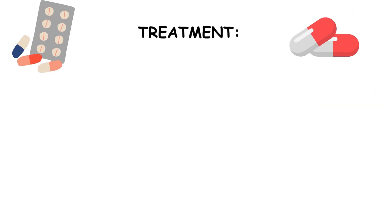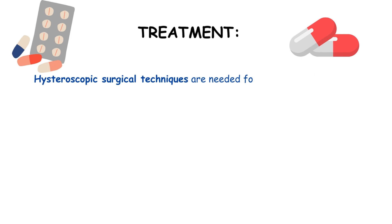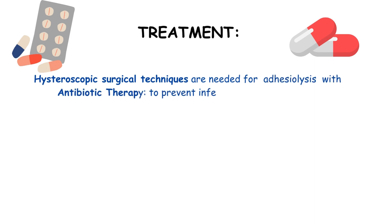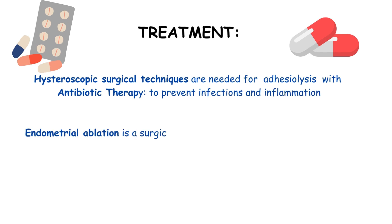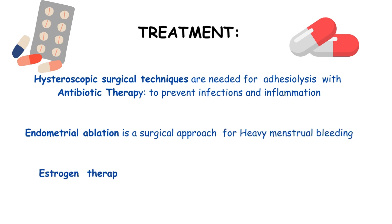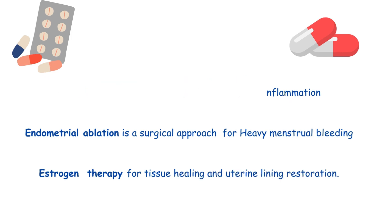The treatment plan involves employing hysteroscopic surgical techniques for adhesiolysis, complemented by antibiotic therapy to prevent infections and inflammation. Additionally, endometrial ablation serves as a surgical approach for addressing heavy menstrual bleeding, while estrogen therapy is administered to facilitate tissue healing and restore the uterine lining.